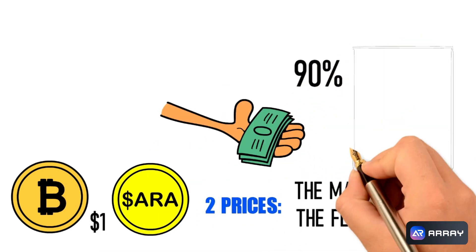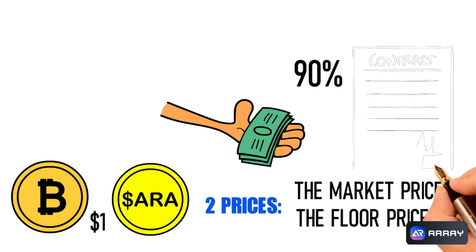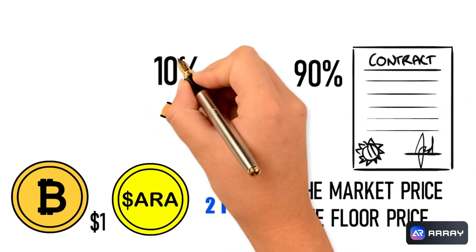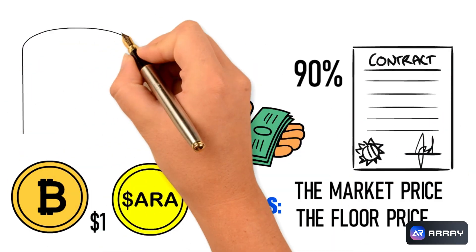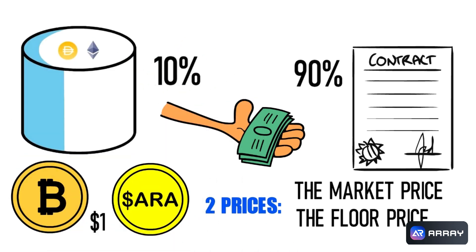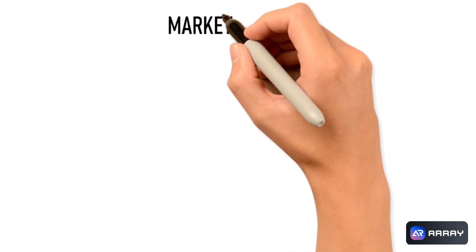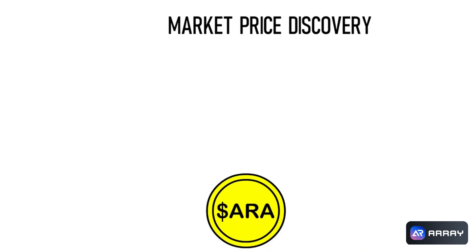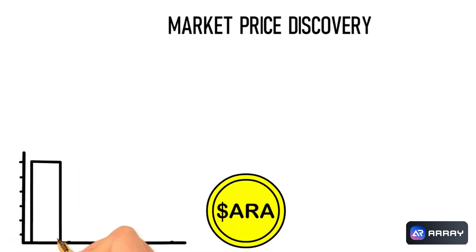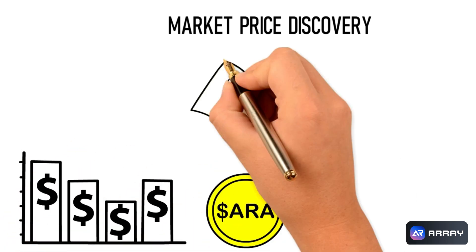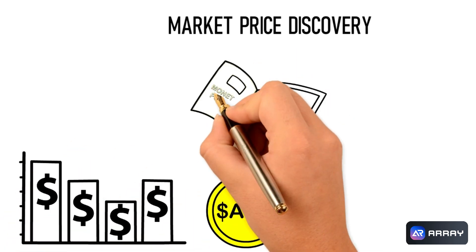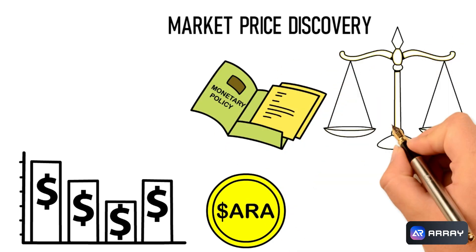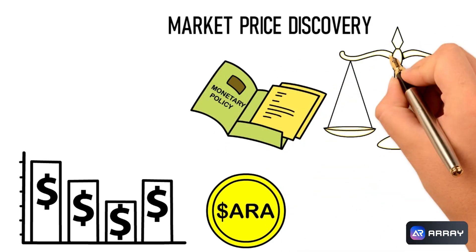Ninety percent of deposited assets are directly injected into the underpinning contract. The remaining 10 percent is injected into the liquidity pool, which is used for market price discovery. Dollar ERA can be freely traded at any price in the open market. Our monetary policy provides a liquidity guarantee, ensuring that the value of Dollar ERA remains stable over time.